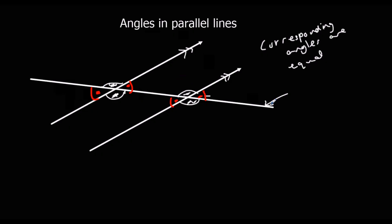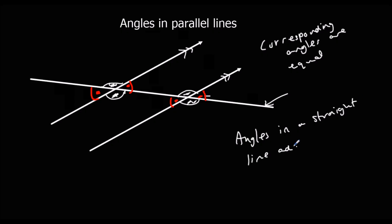Another important relationship you should know is that angles on a straight line add up to 180 degrees. So any straight line — the white one and the red one — always add up to 180 degrees. This is again important for giving reasons why an angle is what we say it is.